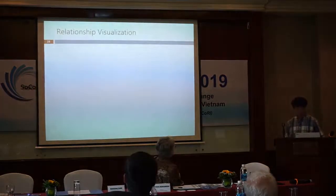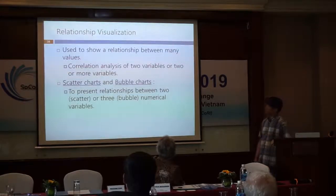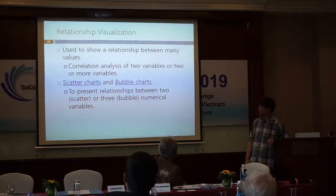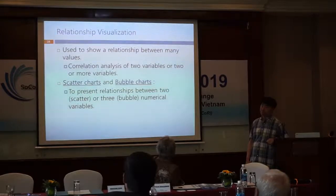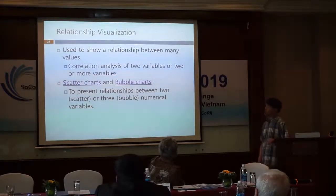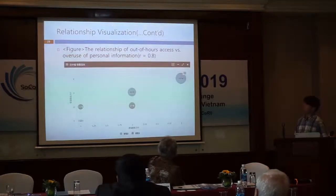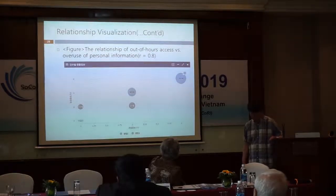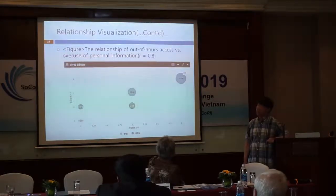Now let's look at the relationship visualization type. Use these charts when the data presentation is used to show relationships between many values. The primary scatter chart is used for correlation and distribution analysis. A bubble chart can be another option when you need to add another dimension to the scatter chart. This bubble chart illustrates the relationship between out-of-hours access to personal information and overuse. It can be assumed that the correlation coefficient indicates a significant relationship.